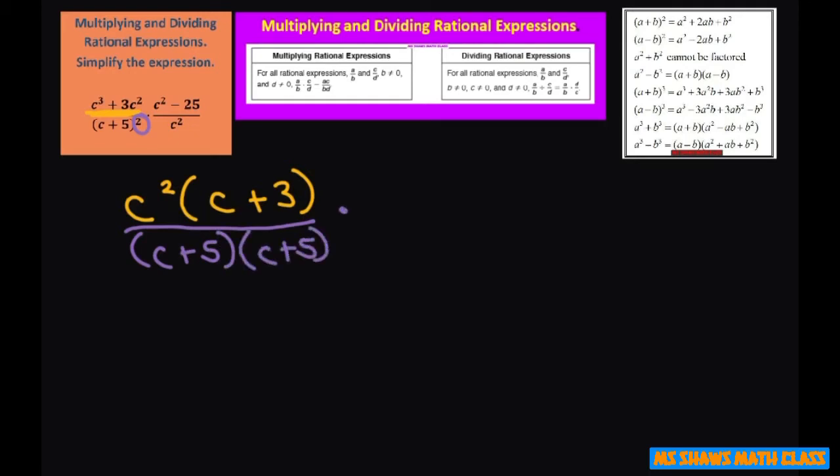And for this one, I'm going to use my difference of squares formula to expand. So that's going to be C plus 5 times C minus 5.